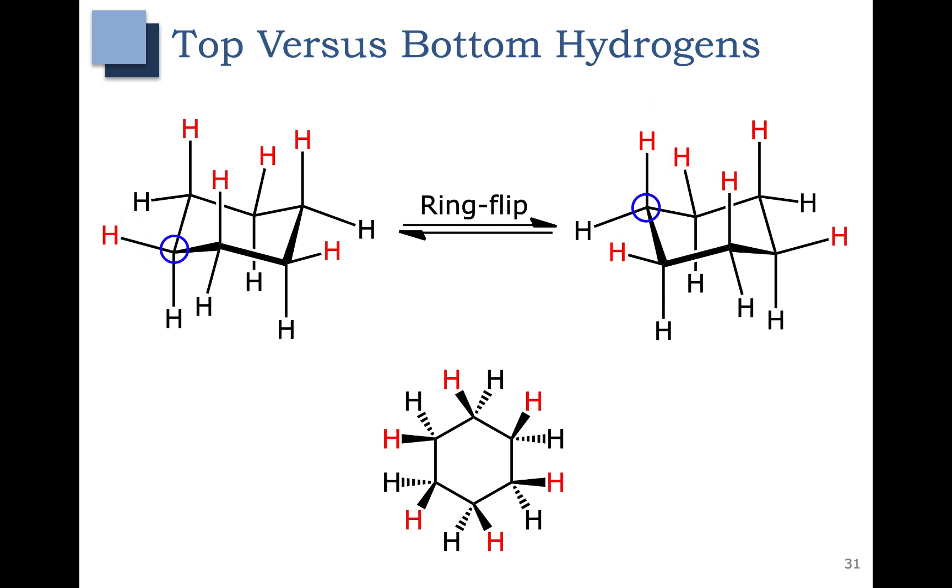Let's number the carbons around the ring. This one I circled in blue will be 1, 2, 3, 4, 5, and 6. Doing the same thing over here.